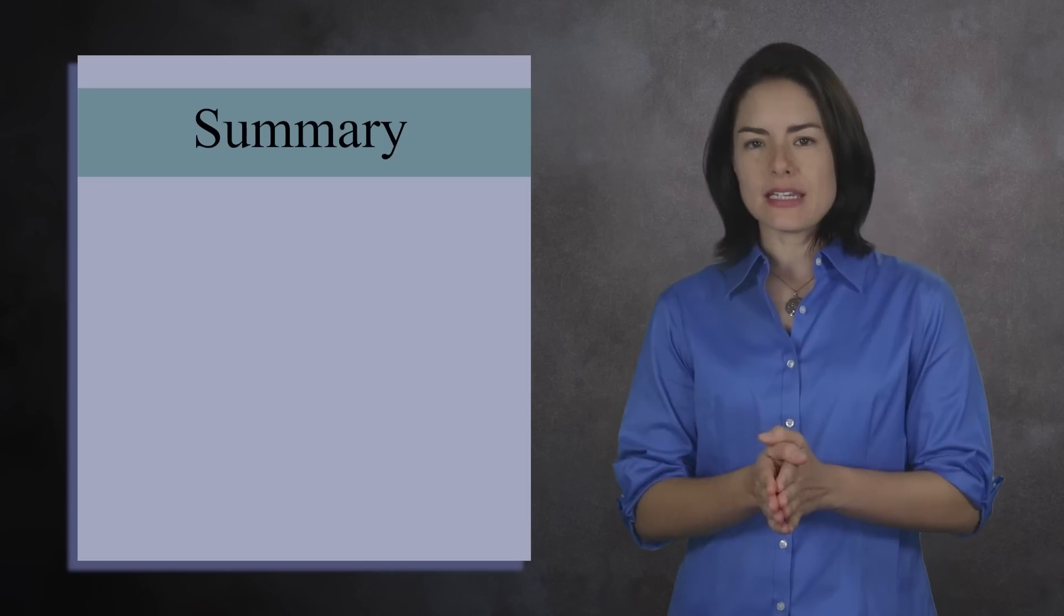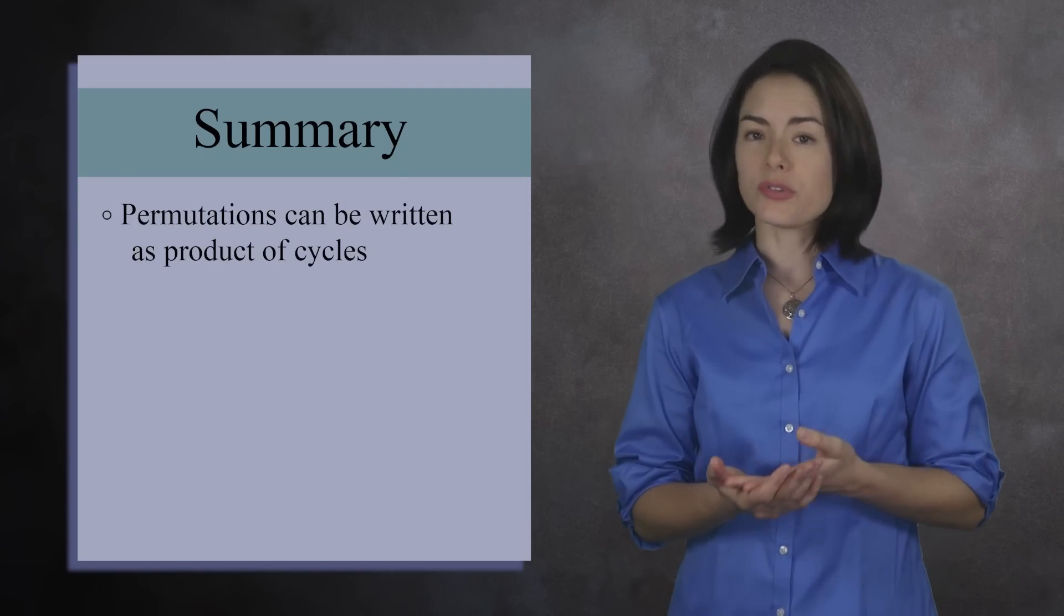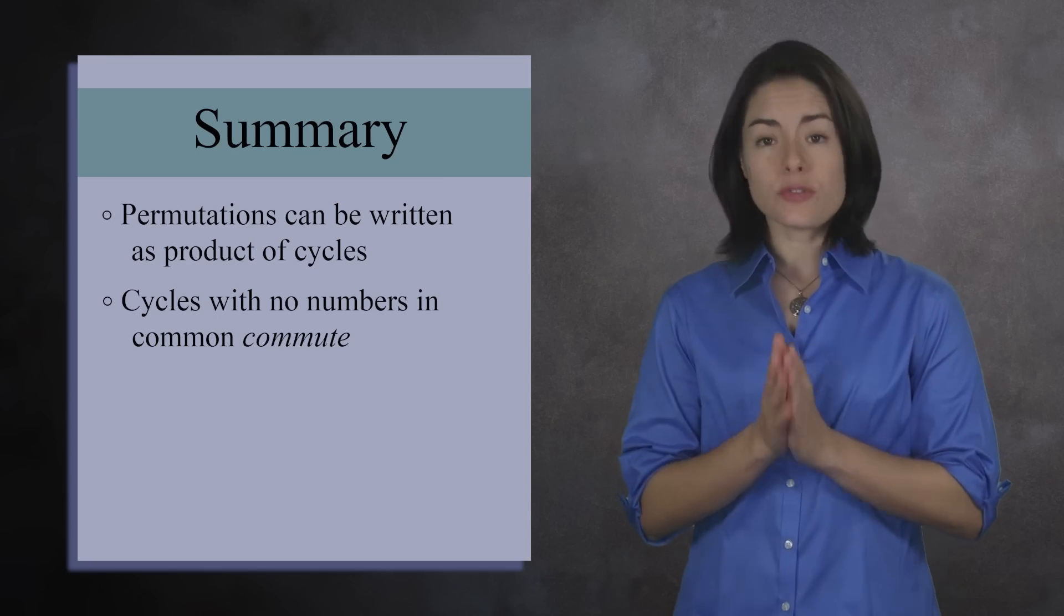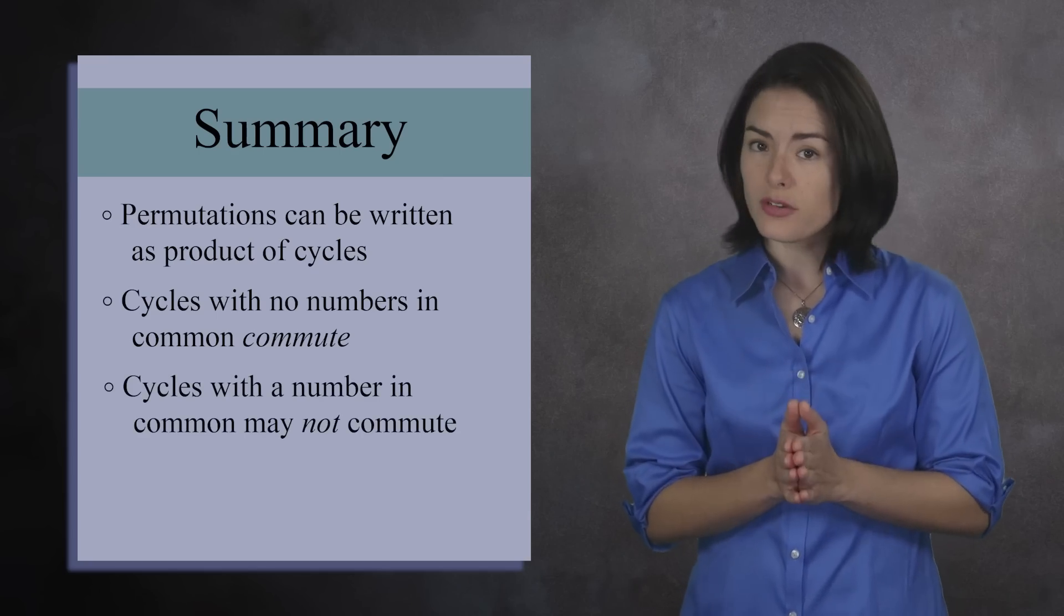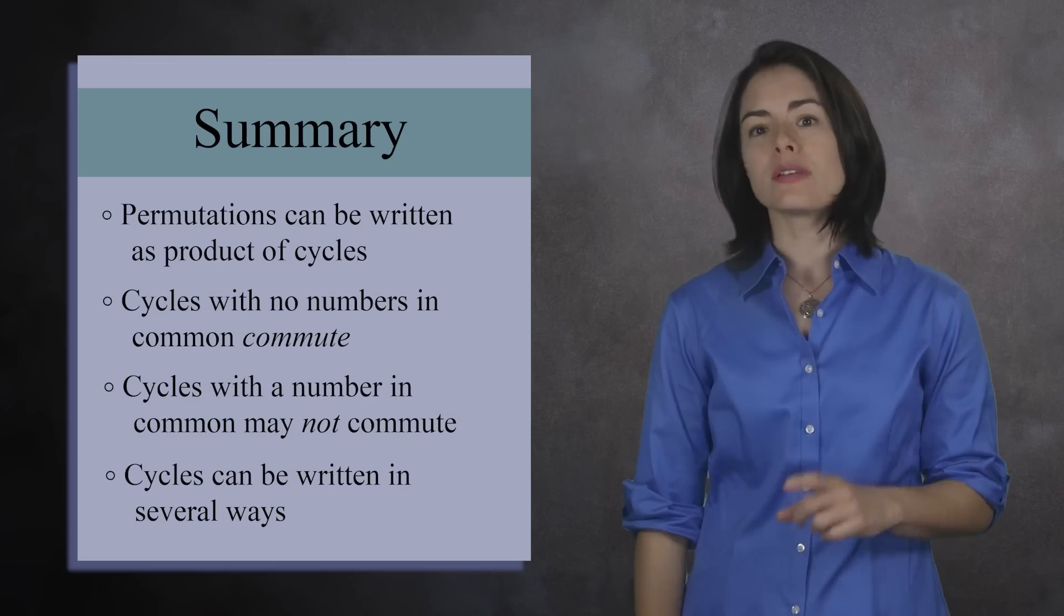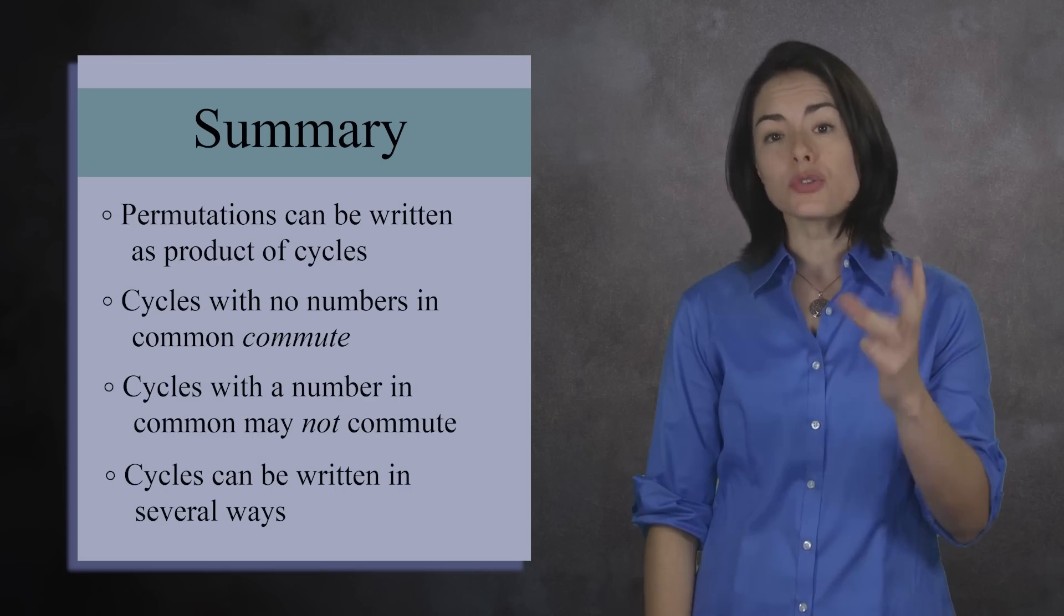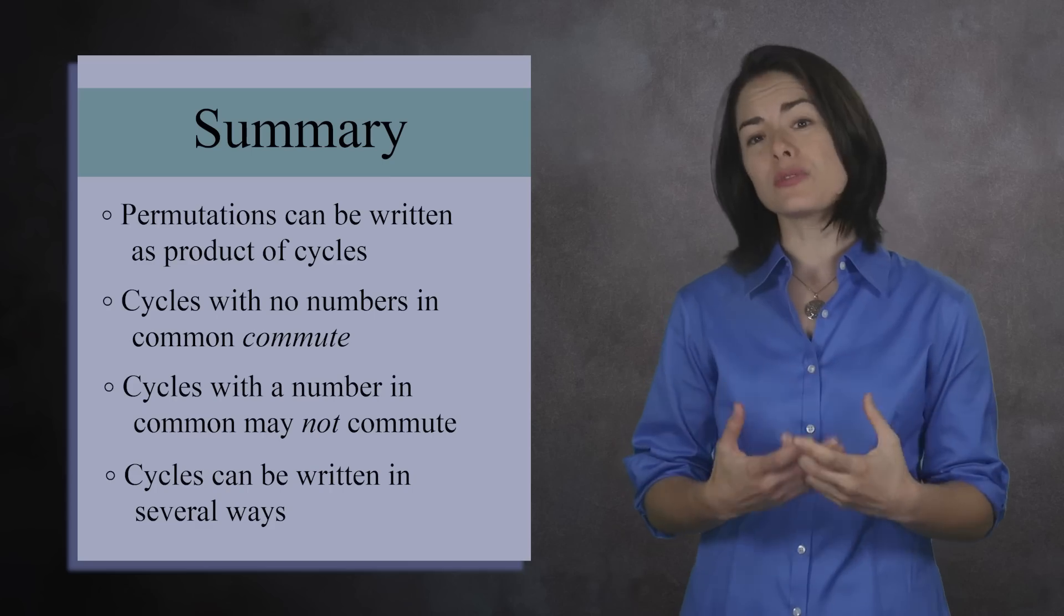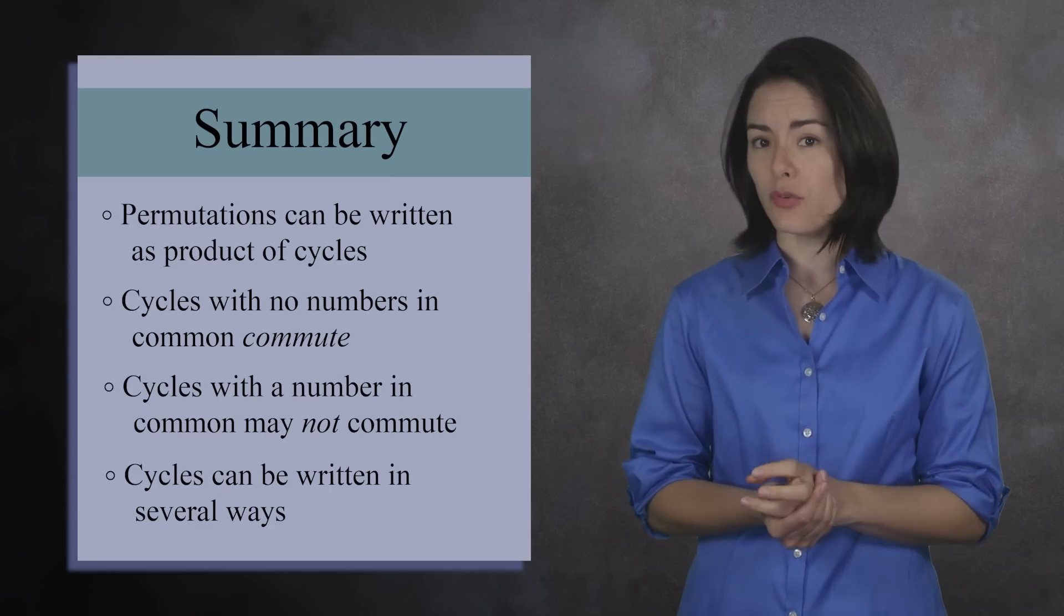As we've seen, every permutation can be written in the compact cycle notation. If 2 neighboring cycles have no numbers in common, you can switch them. But if they do share a number, they may not commute. And lastly, any cycle can be written in a number of ways, provided the circular order does not change. This method of writing permutations is a valuable time saver when working with symmetric groups.